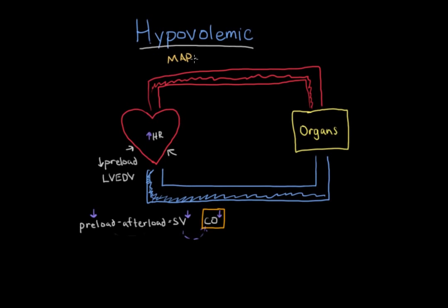As you can recall, the mean arterial pressure, the blood pressure, is equal to cardiac output times resistance of the vessels, systemic vascular resistance. So this is kind of just a quick recap of shock in general.